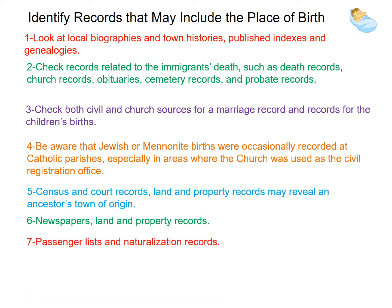Passenger lists and naturalization records can be an important source in the search for an immigrant's town of birth. While it may seem a better place to start, you usually need the information found in the previous steps to enable you to locate immigration and naturalization records. Naturalization was a multi-year, multi-step process and most applications have at least two documents. Declaration of intention may have been filed even if he didn't finish the process. Naturalization records before 1906 are not likely to give a town of origin or names of parents — records after that are much better. Be sure to check the original record for additional information.